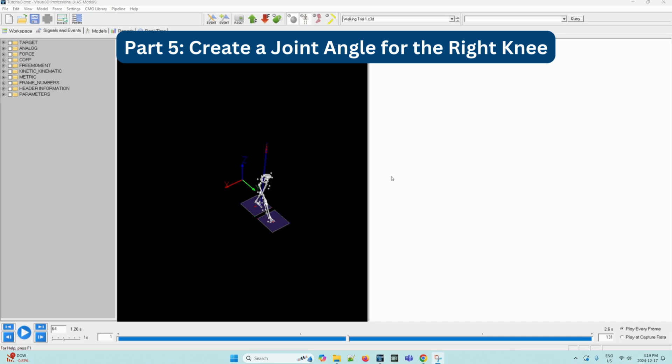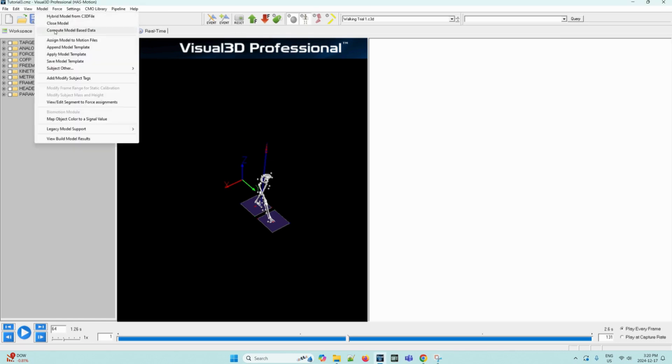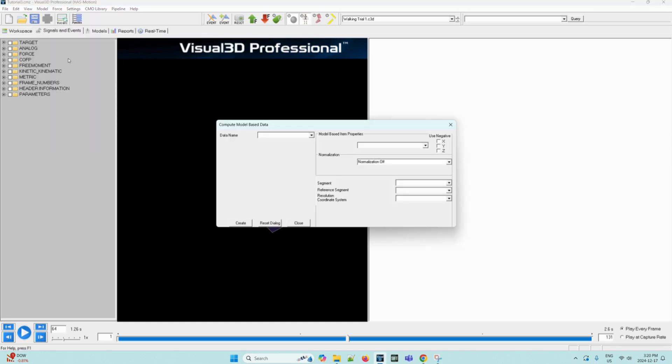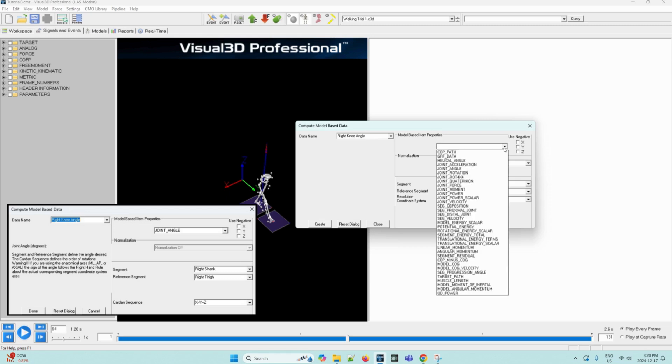Now we can start on creating a joint angle for the right knee. In the application, from the model drop down menu in the main menu bar, we can select Compute Model Based Data. This will prompt the following dialog box to appear. The information needed to be entered will be displayed in the image. In the data name box, we can create a joint angle called Right knee angle.